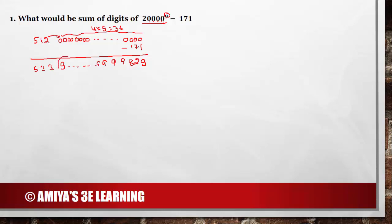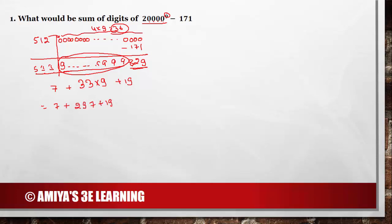So how many 9s do we have actually? We have total 36 zeros so we should have total 36 nines, but we subtracted 171 which means 3 digits. So we can say we have only 33 nines and the summation of 33 nines is nothing but 33 into 9. So this is the summation of these digits. The summation of 7 and 8 is nothing but 19, so the total summation is 7 plus 297 plus 19, and this is nothing but 323.